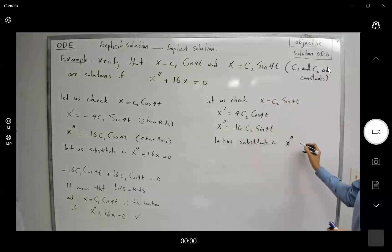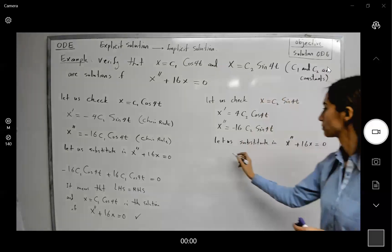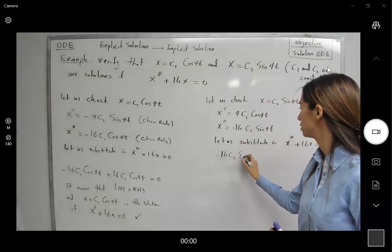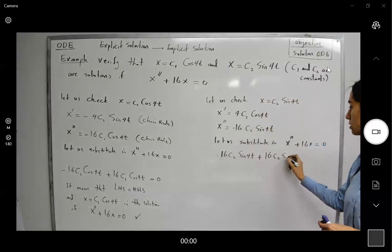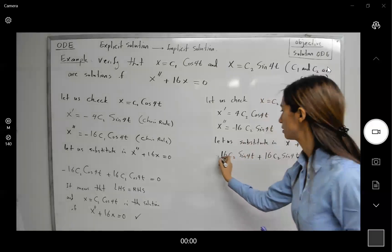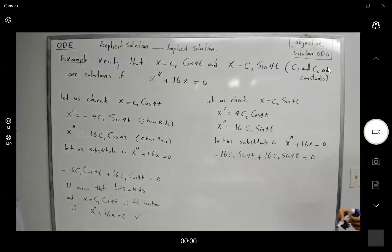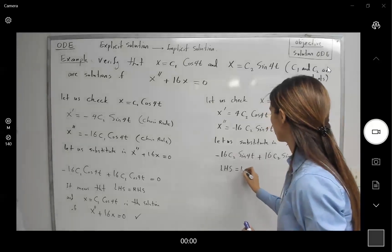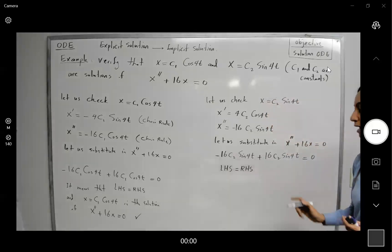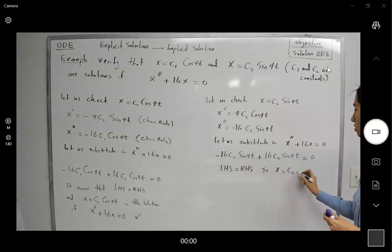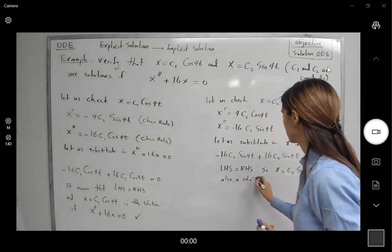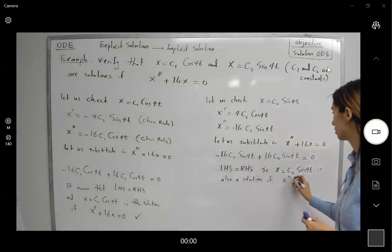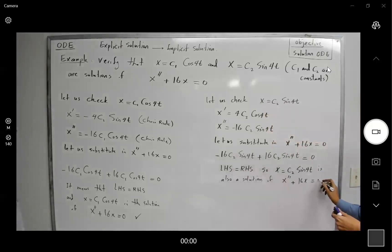Now let us do the substitution into the second derivative of x plus 16x equal to zero. Here you get negative 16C sub 2 sine of 4t, plus 16 times x, where x is C sub 2 sine of 4t. As you can see, they are opposite of each other, so it is equal to zero. This means left-hand side equals right-hand side, so x = C sub 2 sine of 4t is also a solution of the differential equation x'' + 16x = 0.